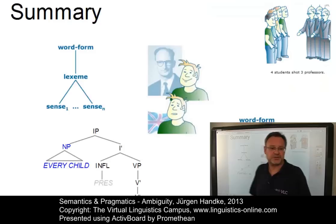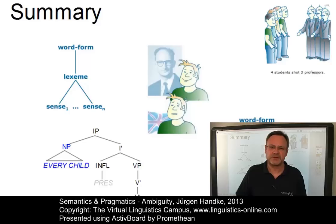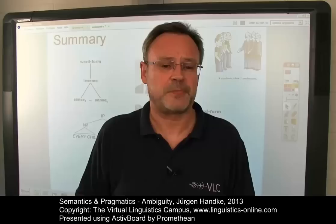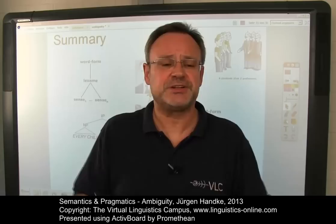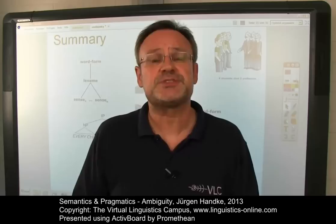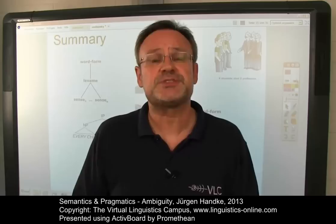So much for ambiguity. I hope to have outlined the essential principles of ambiguity — the phenomenon that an expression has two or more distinct meanings — covering lexical ambiguity, structural ambiguity, referential ambiguity, scope ambiguity, and pragmatic ambiguity. A second phenomenon that allows us to assign different interpretations to an expression is referred to as vagueness. In an additional e-lecture, we will discuss the central types of vagueness and will also introduce the test that allows us to differentiate the two phenomena — ambiguity and vagueness — from one another. Until then, see you.